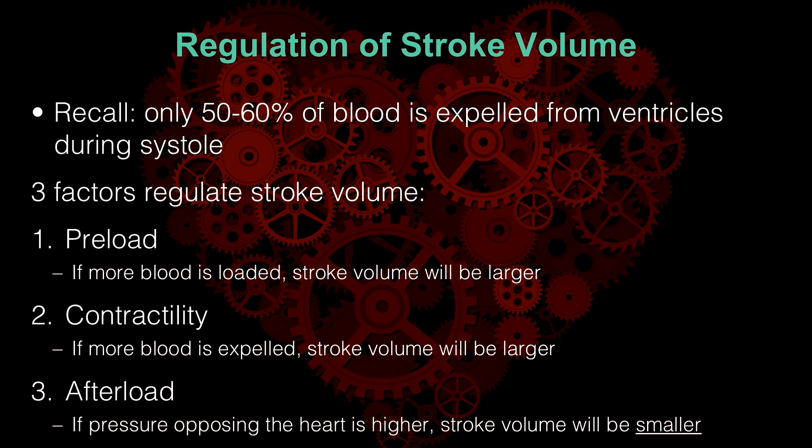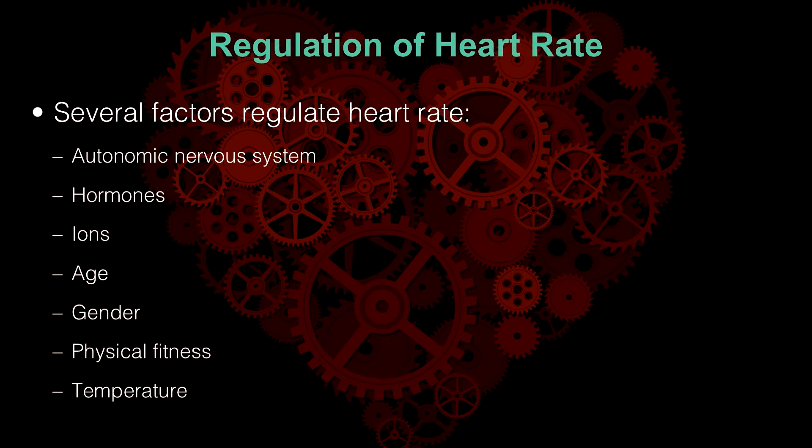So: preload, contractility, afterload — those are the three regulators of stroke volume. We'll come back to those in a moment. For heart rate, we're not going into as much depth. There are a number of factors that influence heart rate, but the two most important are the autonomic nervous system — both sympathetic and parasympathetic branches — and hormones.